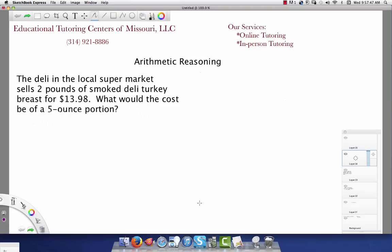Hello, this is Tamisha with Educational Tutoring Centers with an arithmetic reasoning problem to help a student prepare for the ASVAB battery. The question says, the deli in the local supermarket sells two pounds of smoked deli turkey breast for $13.98. What would be the cost of a five-ounce portion?